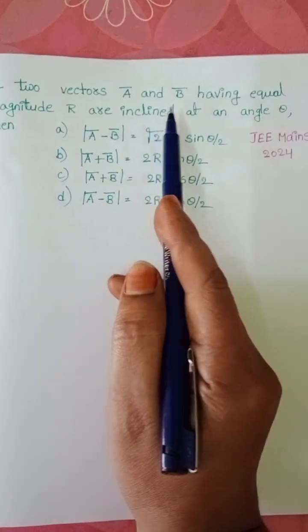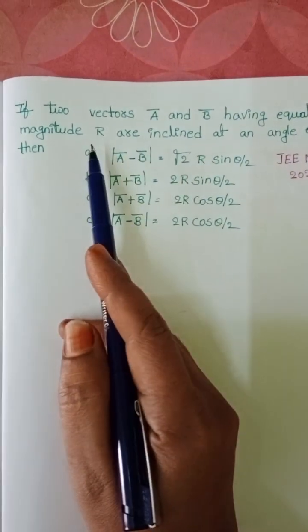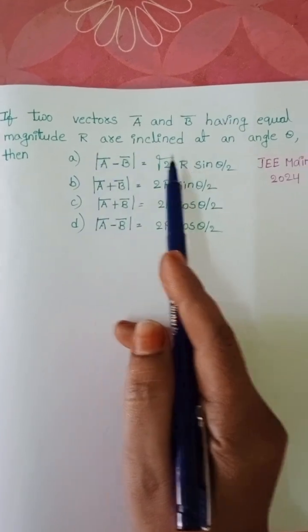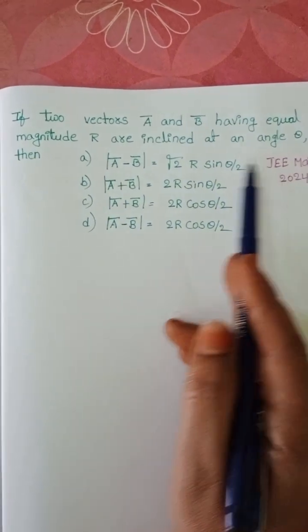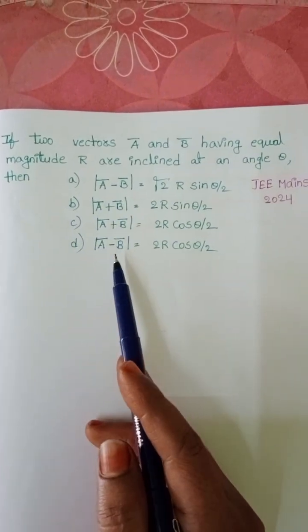If two vectors a bar and b bar having equal magnitude r are inclined at an angle theta, then which of the following option is correct?